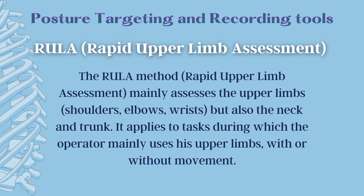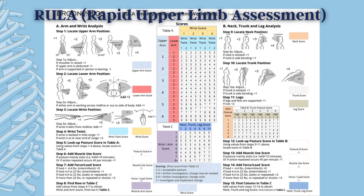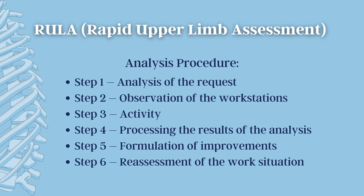Posture targeting and recording tools: many tools have been developed to quickly identify tasks that may cause MSDs, and these tools are easy to learn and can be used in a participative ergonomic approach. The first is RULA, or the Rapid Upper Limb Assessment. The RULA method mainly assesses the upper limbs — shoulders, elbows, wrists — but also the neck and trunk. It applies to tasks during which the operator mainly uses their upper limbs, with postures studied by taking into consideration adjustments relating to force applied and repetitiveness of gestures. For the RULA analysis procedure, there are six steps: Step 1, analysis of the requests; Step 2, observation of the workstations; Step 3, activity; Step 4, processing the results of the analysis; Step 5, formulation of improvements; Step 6, reassessment of the workstation.